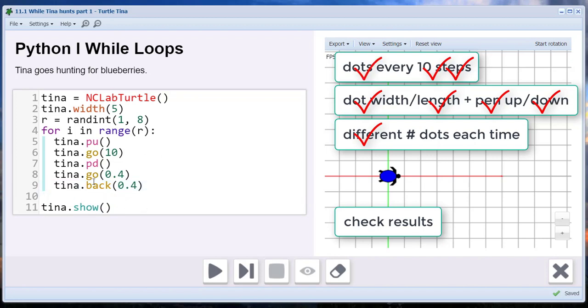And then we'll reset her back on that 10 step interval, and that's it. These actions will be repeated over and over again until we've met the number of times set by the r value. Once we're done with the loop, let's get Tina back to home so she doesn't wander off into the sunset, and we'll print that r value to check to see if we're making the right number of dots.